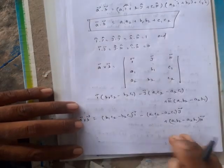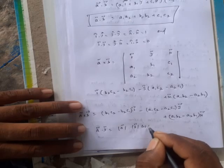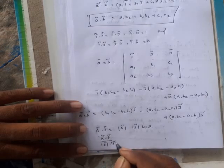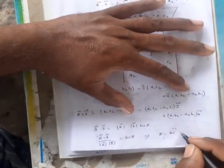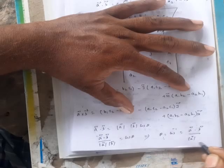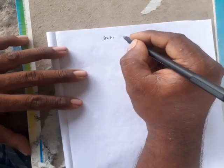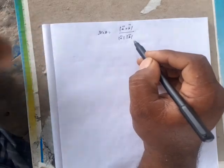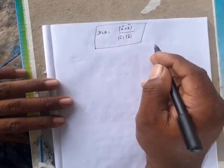We also need to find the angle between two vectors. From the dot product formula, cos theta equals A vector dot B vector divided by modulus of A vector times modulus of B vector, so theta equals cos inverse of that. Similarly, using the cross product formula, modulus of A cross B vector divided by modulus of A vector times modulus of B vector gives sin theta.